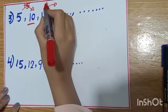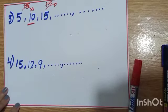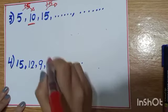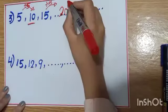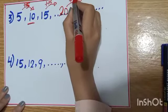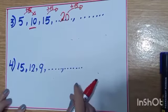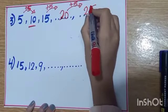At the same way, fifteen plus five. After fifteen: sixteen, seventeen, eighteen, nineteen, twenty. I will write here, twenty. I will add five. After twenty: twenty-one, twenty-two, twenty-three, twenty-four, twenty-five.